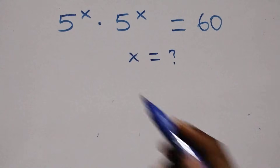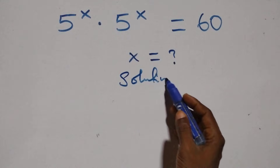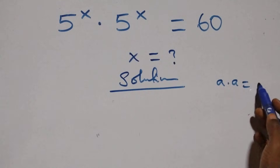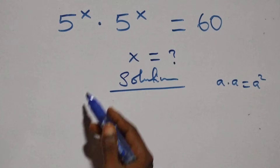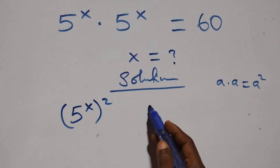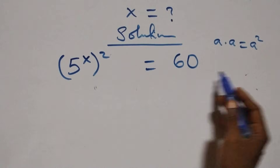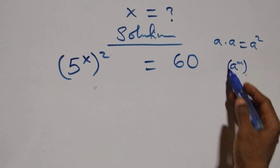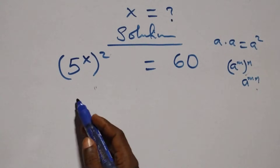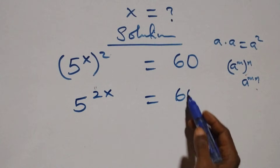Hello, you're welcome. Here we solve a nice exponential equation. What we have is a times a, which is the same as a squared. We rewrite 5 raised to power x, all squared, equals 60. Using the rule a raised to power m, raised to power n equals a raised to power mn, the power multiplies, giving us 5 raised to power 2x equals 60.